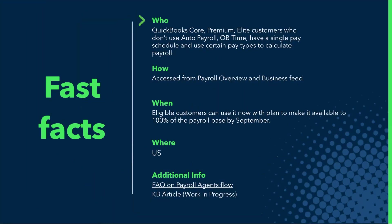And that was a quick demo video of the payroll agent in action. Now let's look at some fast facts. The agent is currently available to QuickBooks Core, Premium, and Elite customers who don't use auto payroll, aren't actively using QuickBooks Time, only have a single pay schedule, and are using certain pay types to calculate payroll. These are early guardrails to ensure the agent shows up best for the eligible cohort. We are actively working to train the agent to support additional cohorts — customers with multiple pay schedules and a wider range of pay types. It can be accessed from the payroll overview page and the business feed. Right now it's available just in the US to eligible customers, but we're working to make it available to all payroll customers by September. There's a knowledge-base article that'll be available in our community very soon.